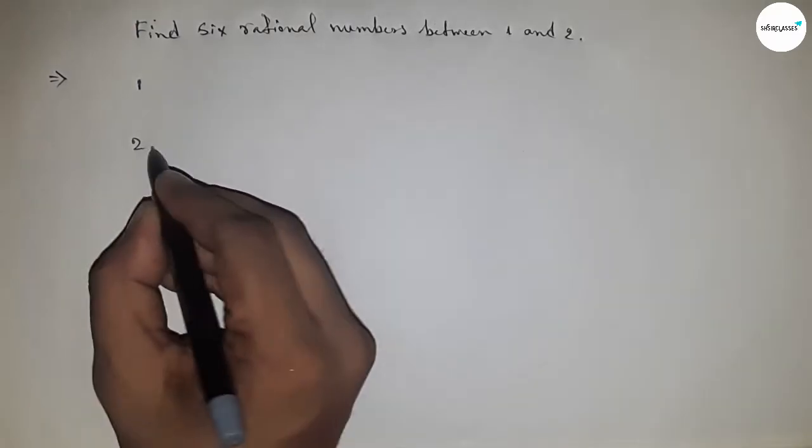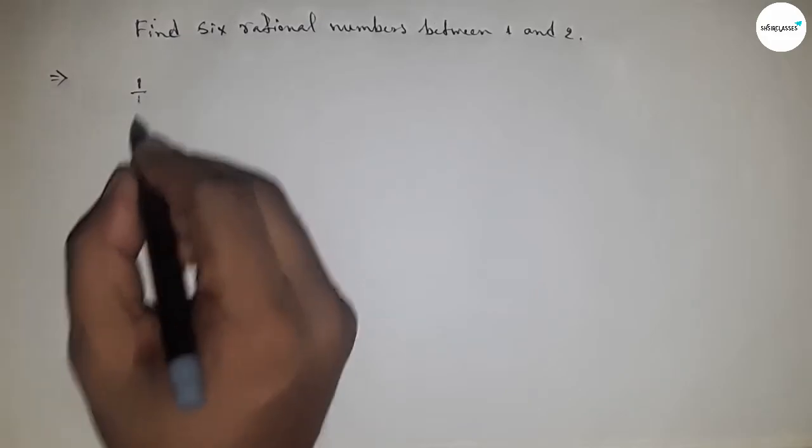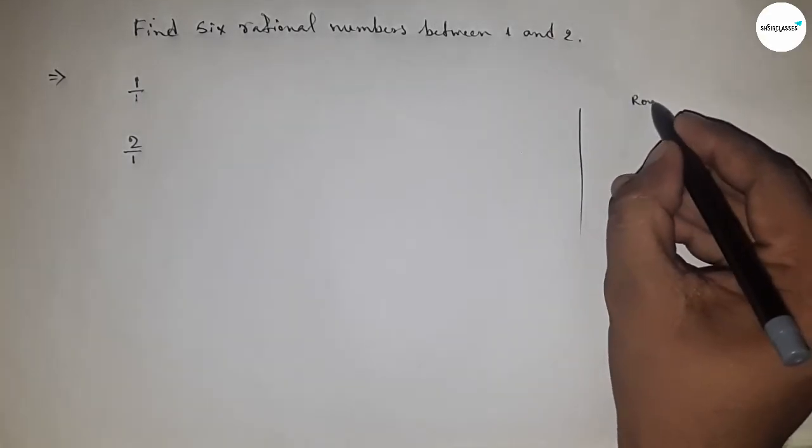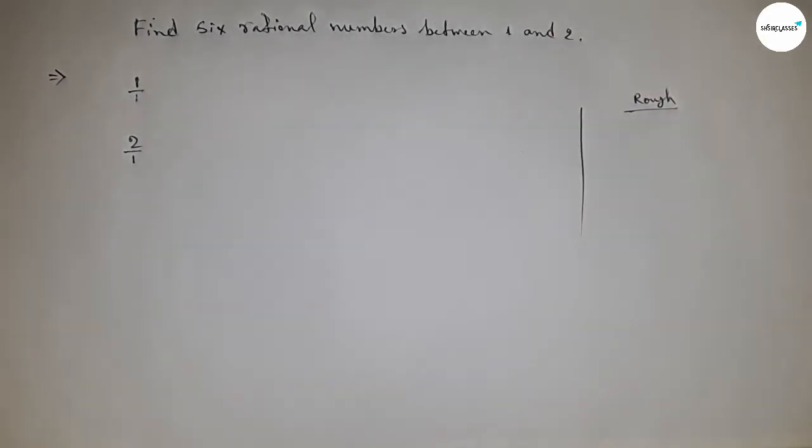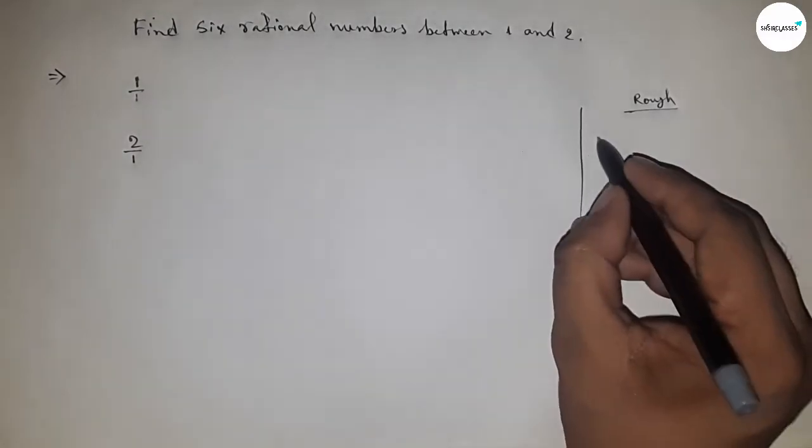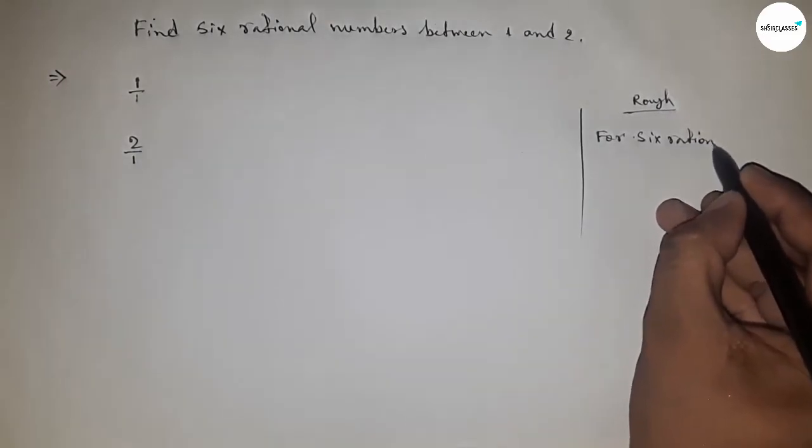We have the numbers one and two. Next, we can express one as one upon one and two as two upon one. Now, discussing some calculation here - the denominators of both are equal. So for six rational numbers, we have to multiply.